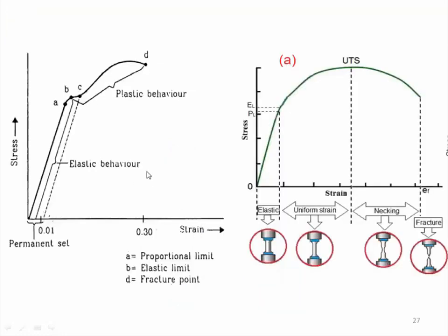Suppose I have a metal wire and I am applying tensile stress, and due to this stress there will be a strain. I am plotting stress and strain on a graph. Initially, stress and strain will be proportional, and if I remove that stress the material will regain its natural shape — the material behaves like an elastic body. This occurs up to point A, which is called the proportional limit. Beyond this limit, stress and strain will not remain proportional.